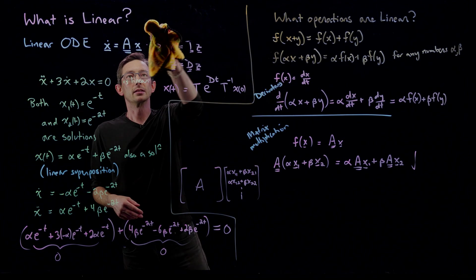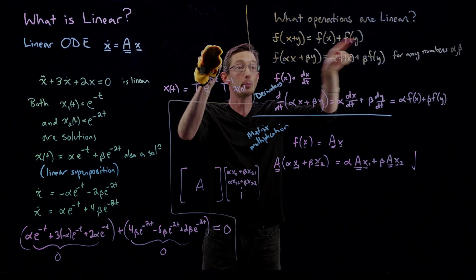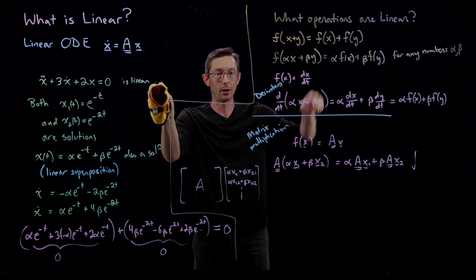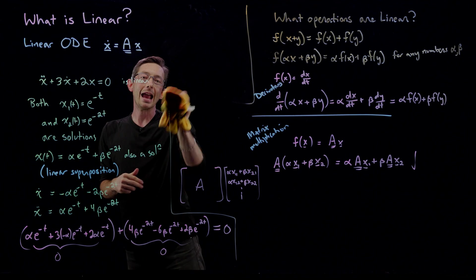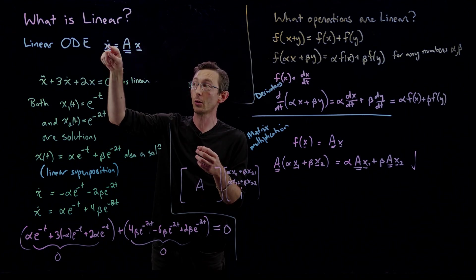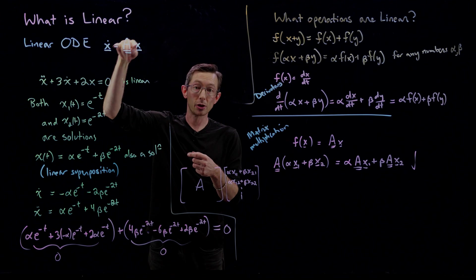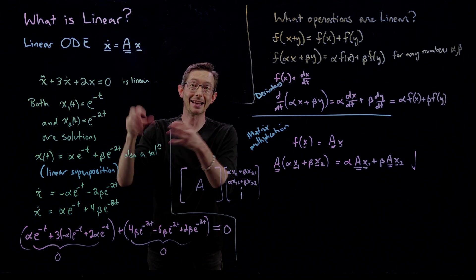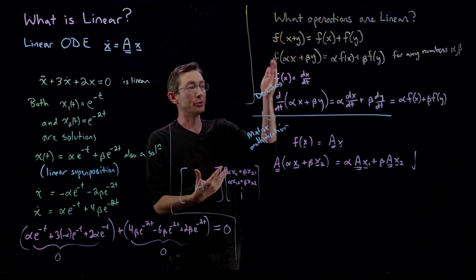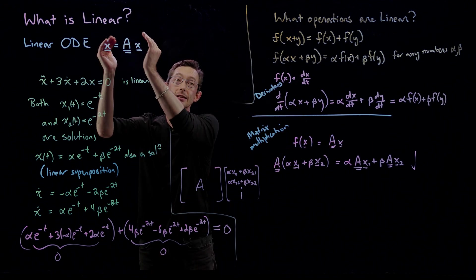To summarize: a linear function satisfies superposition — f(x + y) = f(x) + f(y). For linear ordinary differential equations, which contain only derivatives and linear operators of x, linear superposition holds. If I have multiple solutions, I can add them in any proportion and the result is still a solution. Derivatives and matrix multiplication are both linear operators, which is why equations built from them are linear.